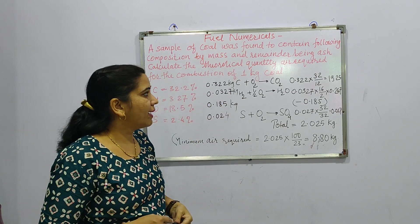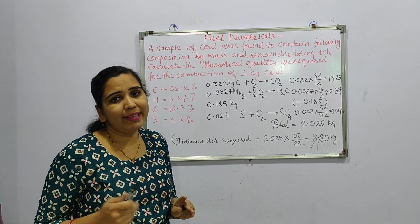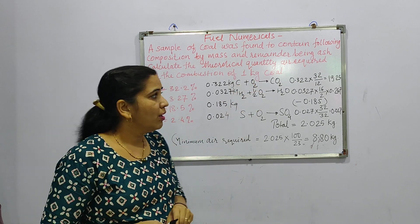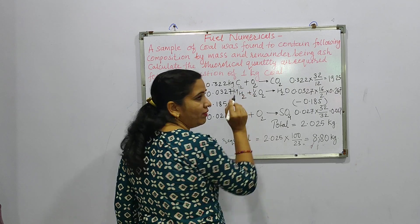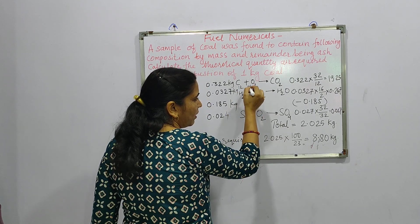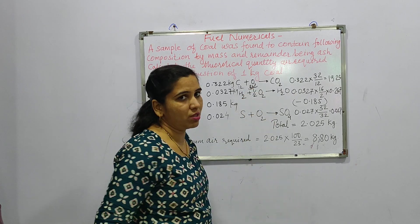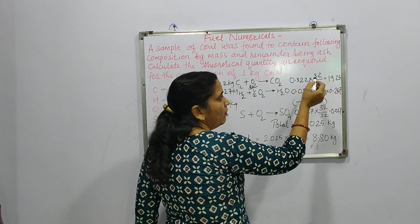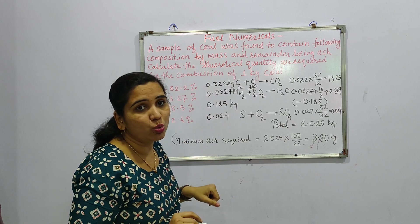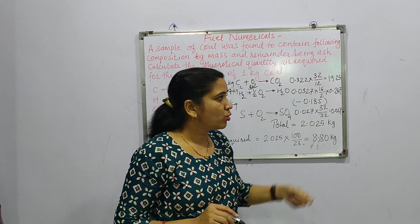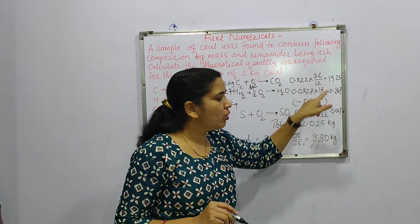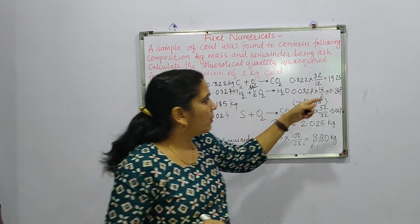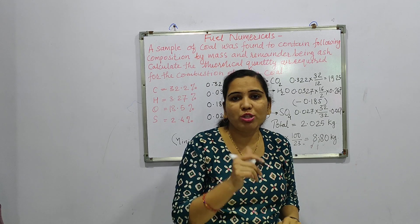To find oxygen required, we multiply the mass of each element by the stoichiometric ratio. For carbon: molecular weight of carbon is 12 and oxygen is 32, so 12 kg carbon burns with 32 kg oxygen. Therefore, 0.322 × 32/12 gives approximately 0.859 kg of oxygen.